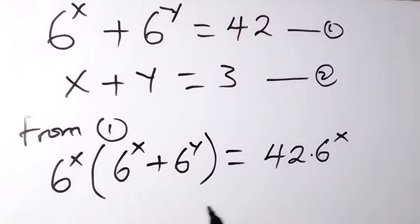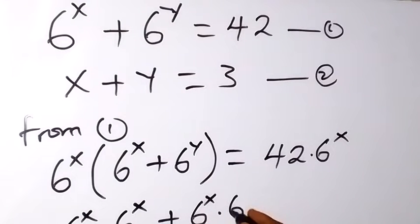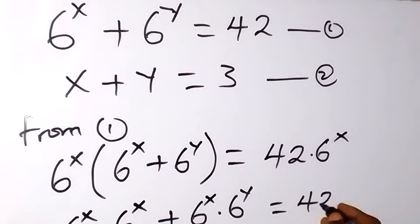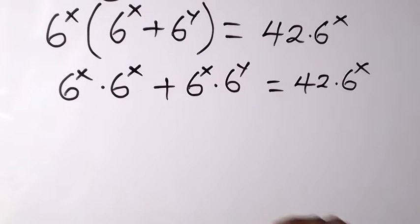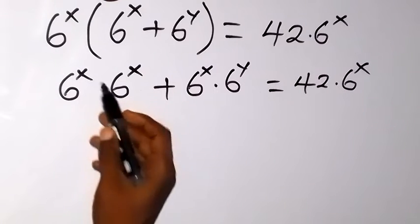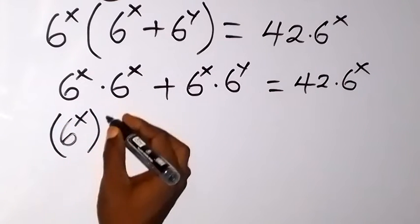From here, when we use 6 raised to the power x to expand the bracket, we get 6 raised to the power x multiplied by 6 raised to the power x, plus 6 raised to the power x multiplied by 6 raised to the power y, which equals 42 multiplied by 6 raised to the power x. Applying the law of indices, 6^x times 6^x is the same as 6 raised to the power x, then raised to the power 2.